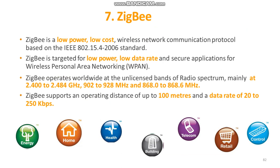The next example is ZigBee — a low-power, low-cost device based on the IEEE 802.15.2006 standard. It is mostly targeted for low-power and low-data-rate applications. ZigBee specifications support a robust mesh network containing multiple nodes and works on unlicensed bands of radio spectrum at 2.400 to 2.484 gigahertz. It supports an operating distance of about 100 meters and a data rate of 20 to 250 kilobits per second.